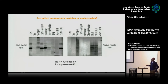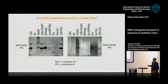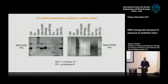We mixed fraction E with proteinase K and the fraction stayed pretty much the same. But when we added nuclease S7, which digests RNA and DNA, fraction E disappeared — as you can see clearly on the native gel where fraction E is gone. This led us to conclude that this fraction contained nucleic acids rather than proteins.